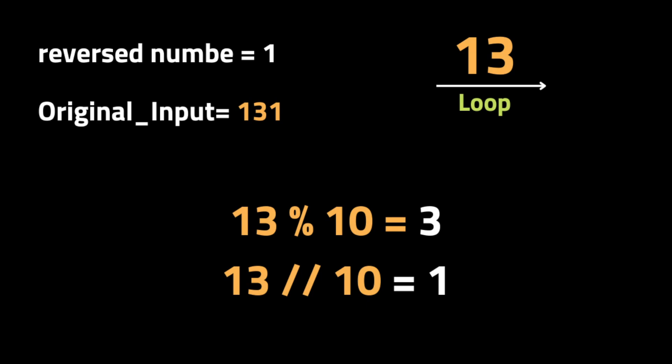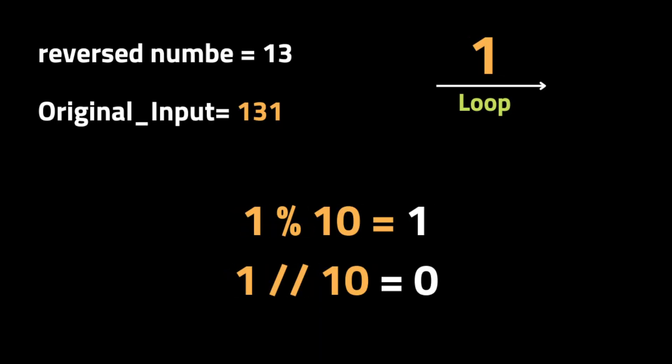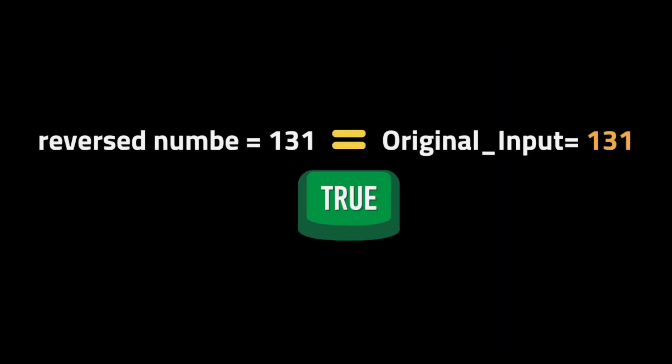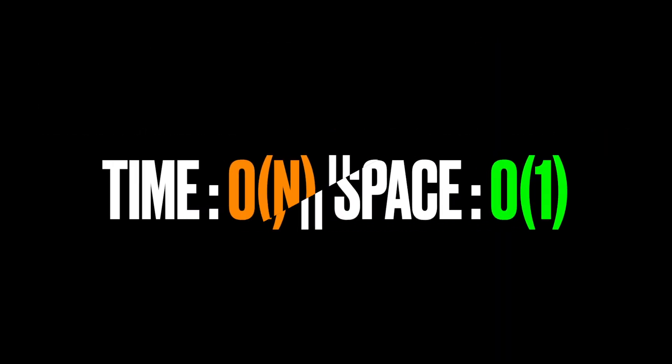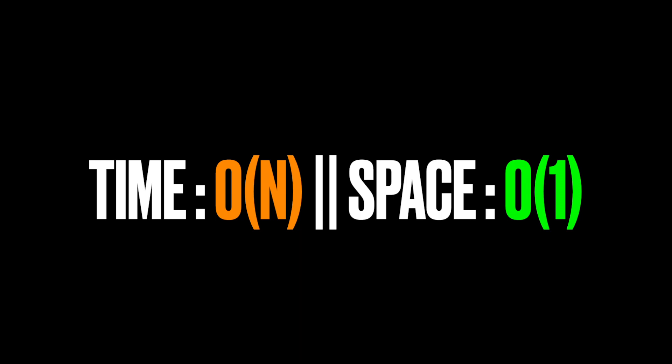We then eliminate that digit from the input integer by dividing by 10. We repeat the same process - each time taking the last digit with the modulo operator, multiplying the previous reversed number by 10, and adding the current digit to it. We keep repeating this until the end. The time complexity for this solution is O(n), where n is the number of digits in the input integer, and the space complexity is O(1) since we are not using any additional memory - just variables.